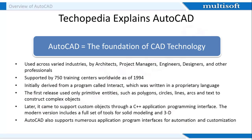The first version by the Autodesk company was demonstrated at the 1982 Comdex and was released in December. The 2016 release marked the 30th major release for AutoCAD for the Windows operating system, and the 2014 release marked the 4th consecutive year for the AutoCAD release for Mac OS.